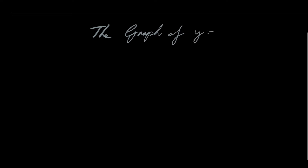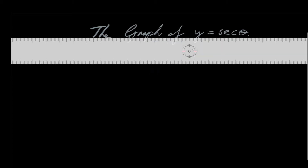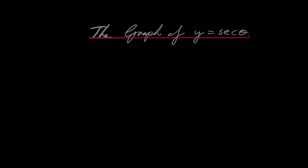Hi everyone. Welcome to my new video in my Mathematics Essentials series. We are still in the revision topics in the trigonometry section. In the last video I graphed and explained the graph of y equals the cosecant of theta, and in this video I am going to graph and explain the graph of y equals the secant of theta. This is one of our reciprocal trigonometric functions — y equals the secant of theta is equal to 1 over the cosine of theta.